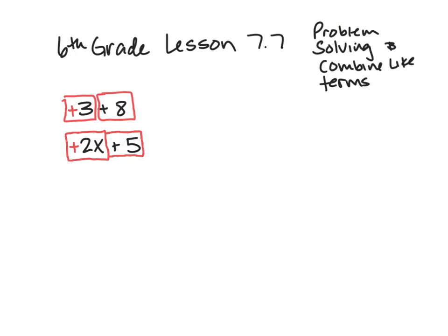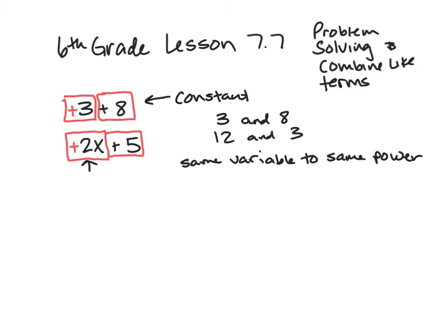Now that we recognize what terms are, let's talk about like terms. Constants — numbers that won't change by a variable — those are like terms. So I could put those two things together. Like 3 and 8 are like terms; 12 and 3 would be like terms. What those aren't like is something like 2x. 12 and 2x are different terms — they are not alike, so you cannot put them together.